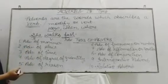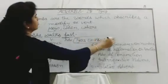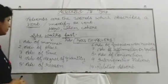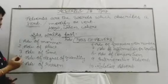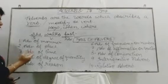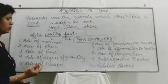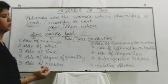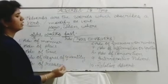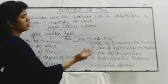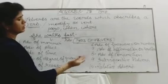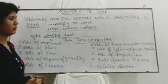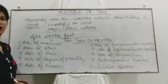Now let's talk about types of adverbs. There are ten types: adverb of manner, adverb of place, adverb of time, adverb of degree or quantity, adverb of reason, adverb of frequency or number, adverb of affirmation or negation, adverb of conjunction, interrogative adverb, and relative adverb. We are going to discuss them one by one.